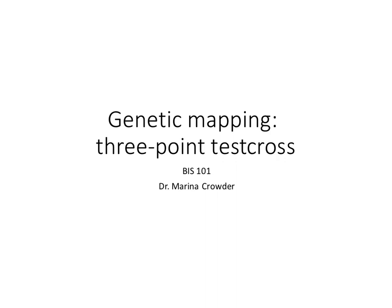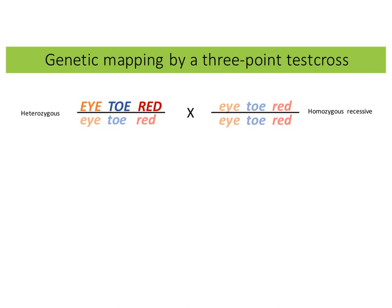Hi, Dr. Crowder here. This is a video that I am making to go through an example of how we use a three-point test cross to map the genetic distances of three linked loci. I'm illustrating here a three-point test cross between two diploid organisms where we're tracking three linked genes: the gene I, the gene toe, and the gene red.